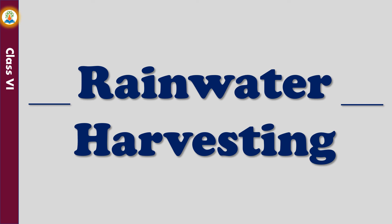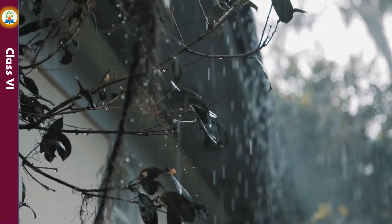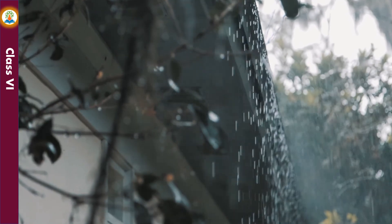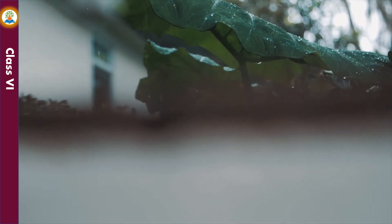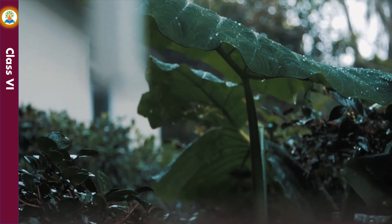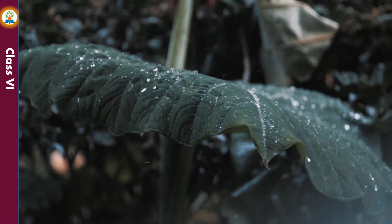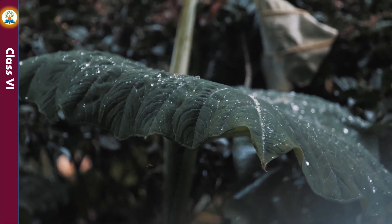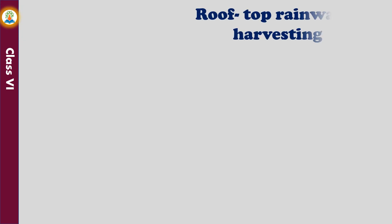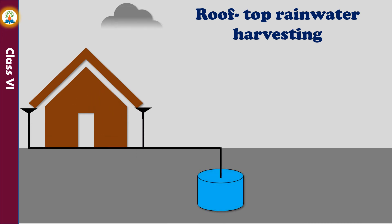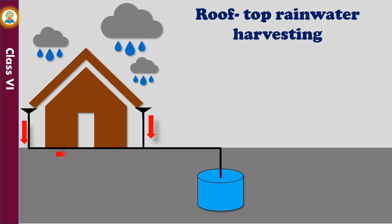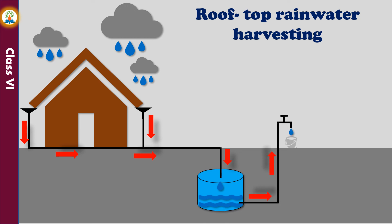Rainwater normally runs into drains, rivers, and oceans, and some seeps through the soil to collect as underground water. Only a very small portion is retained on land, so we should try to collect rainwater rather than allowing it to run off unused. This can be done by rooftop rainwater harvesting — a method of collecting rainwater from rooftops through pipes into a water tank. This saves money on water bills, provides water for your garden, and helps the environment by giving back to the water supply.